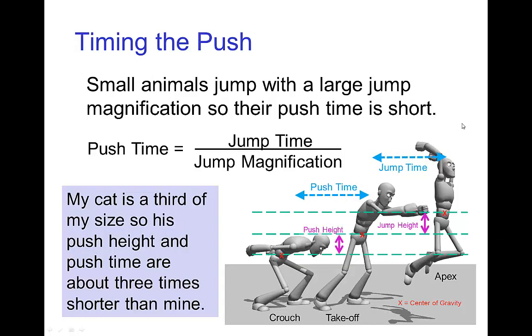The timing of pushing off in a jump is also affected by scale. For small animals, since they have a large jump magnification, the push time, the time that they're pushing off on the ground in order to jump, is shorter. My cat is about a third my size. So the distance that he pushes, the push height, is three times less than mine. And similarly, the time that he pushes off is about three times shorter than mine. So if I jump and push off the ground for three frames, he would probably push off the ground for only one frame.